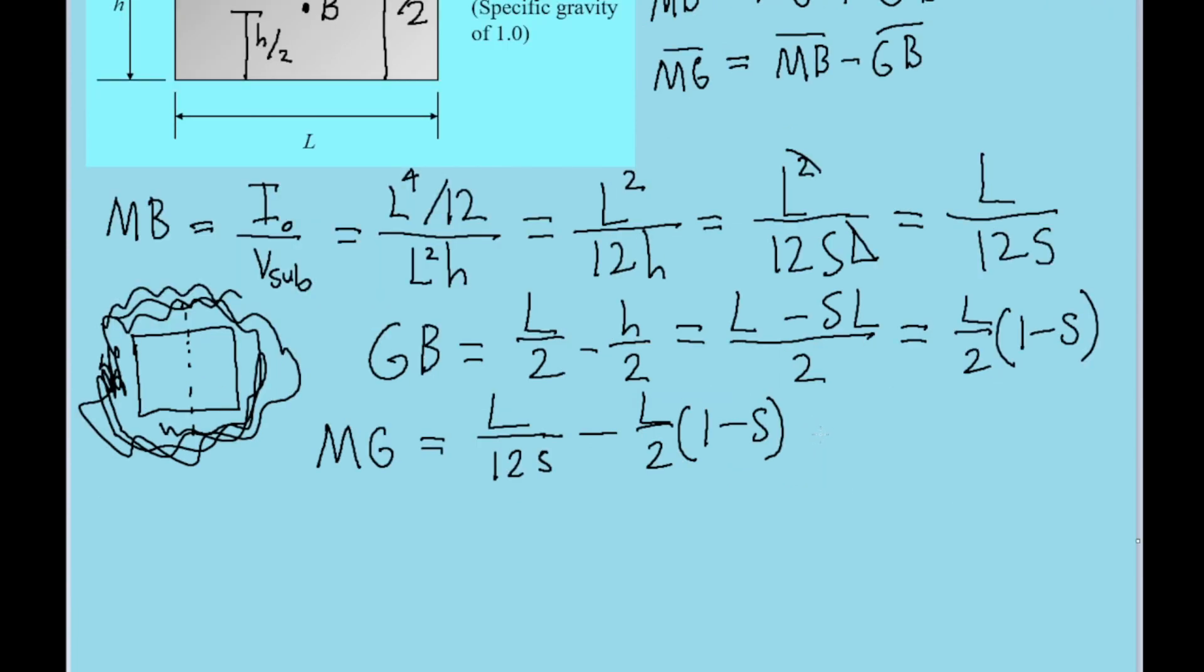The way I'm going to proceed is I'm going to set this equal to 0. The reason I'm doing this is because we want to find the condition that will make MG positive. Setting this equal to 0 will allow us to write this as a quadratic equation, and graphing that will help us see where this function is positive or negative. So let's simplify this down. That's L over 12s minus L over 2 plus Ls over 2 equal to 0.